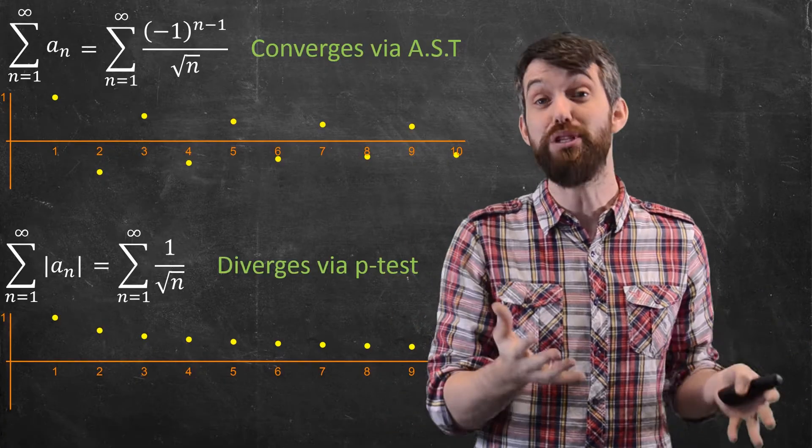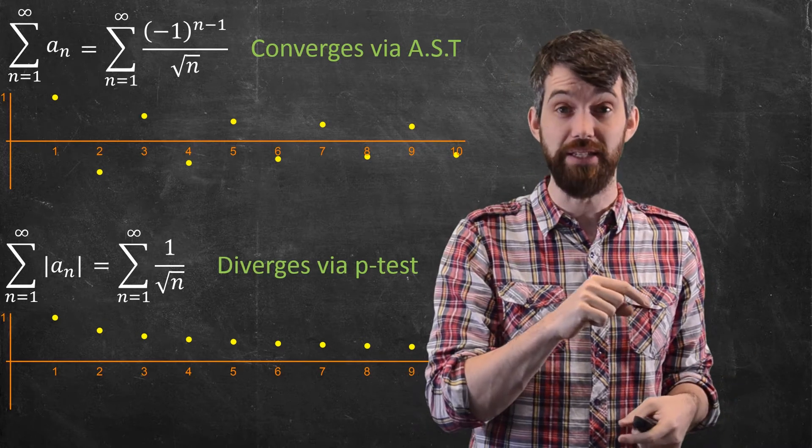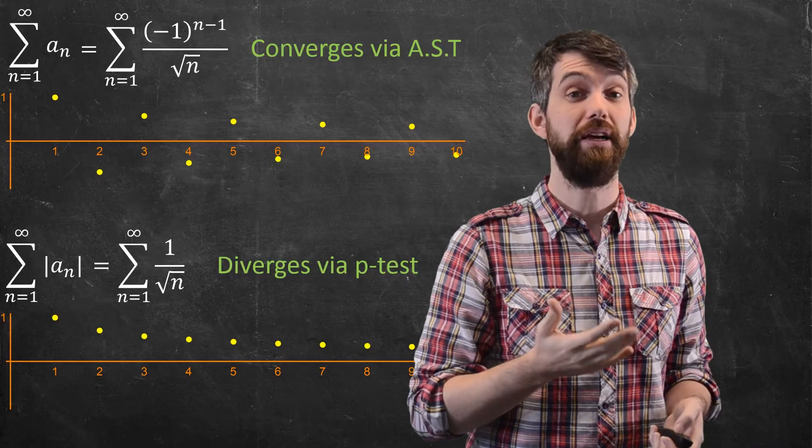So it would make sense that the absolute value one would be the larger, that it might diverge even though the one with the minus signs converged. And indeed, this is generally the case.